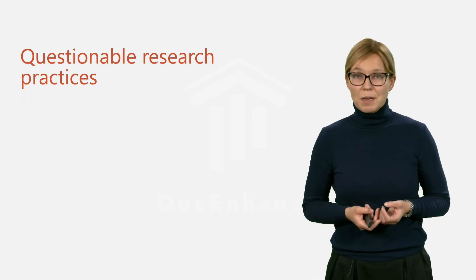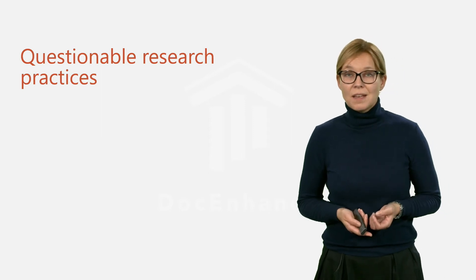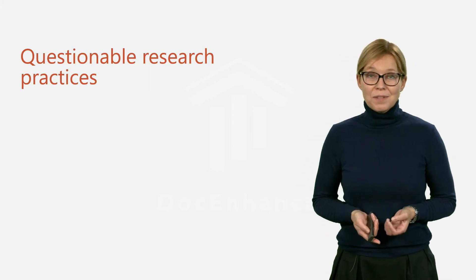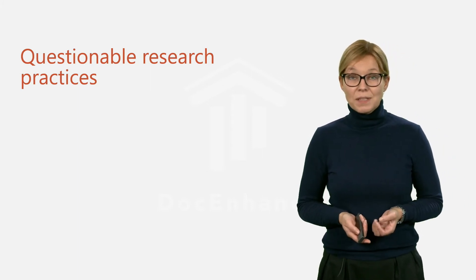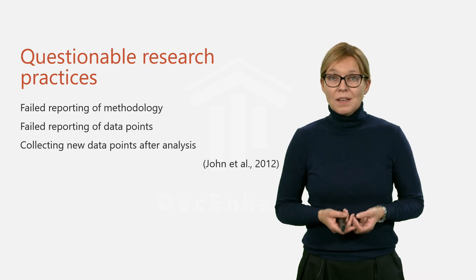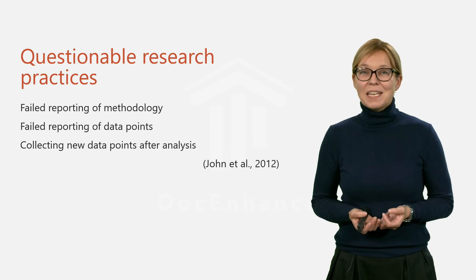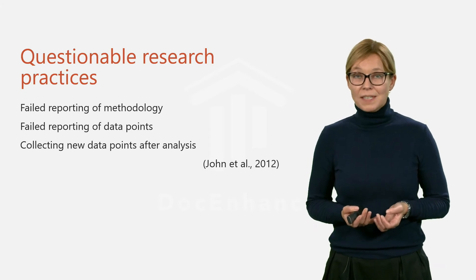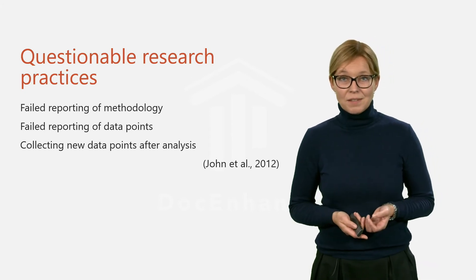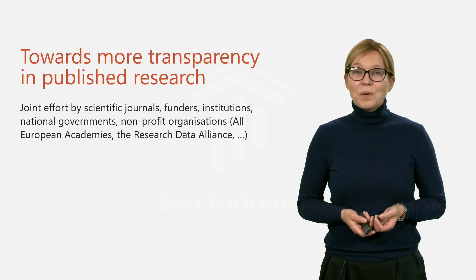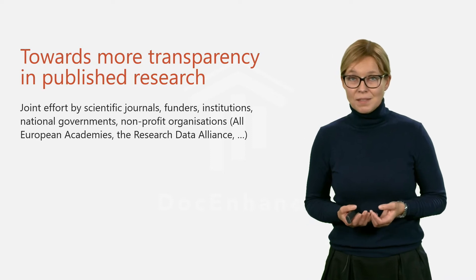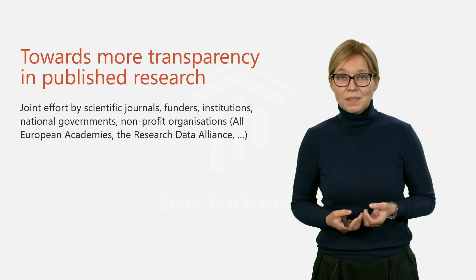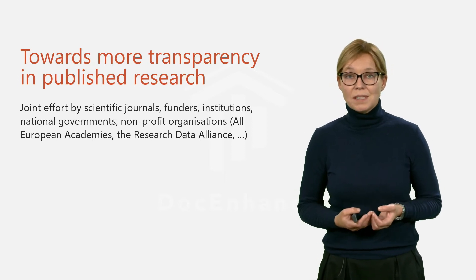One reason for the current replicability crisis is questionable research practices — practices that don't fall under the category of fraud, but which are damaging enough and unfortunately quite widespread. A few examples of such practices are failing to report all methodological choices, excluding data points, and deciding to collect more data after determining the significance of the existing results. In order to promote a more healthy research and publication system, scientific journals, funders, institutions and national governments now work together and demand more transparency in published research.